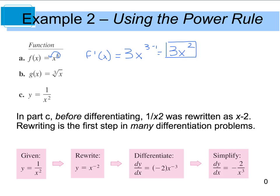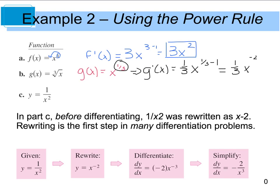For part B, I'm going to highly suggest that you rewrite your radicals. I'm going to rewrite g of x as x to the 1 third — rewrite your radicals as fractional exponents. Now when I solve this, I'm going to pull this 1 third down up front. So g prime of x is equal to 1 third times x to the 1 third minus 1, which gives us 1 third x to the negative 2 thirds. If you want, you can rewrite that as 1 third times 1 over x to the positive 2 thirds in the denominator, with 1 in the numerator. Your final answer would be this.